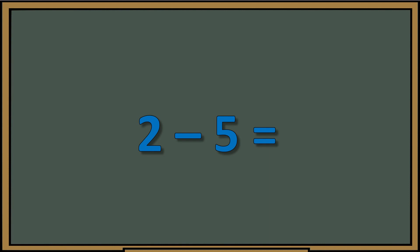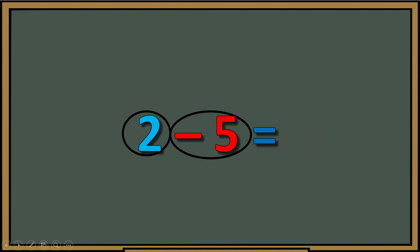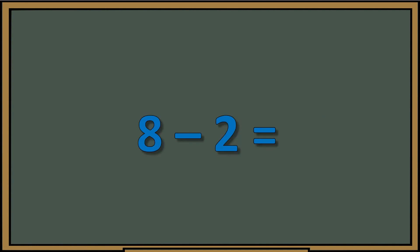Now let's try examples without the visuals, still applying the strategy. Circle the two, then circle the five with the minus in front. We have two good guys and five bad guys — we know we're subtracting. But who has the bigger group? Five has more, so they win and our answer is negative. Negative three. We are right.